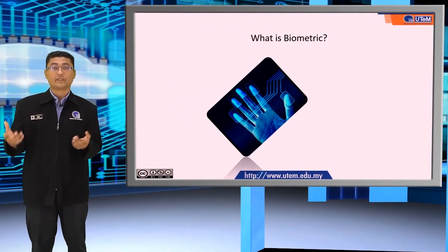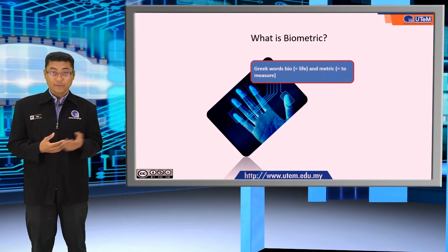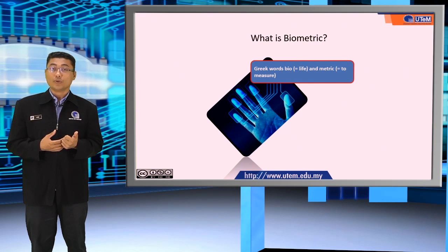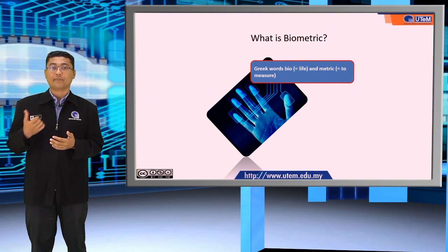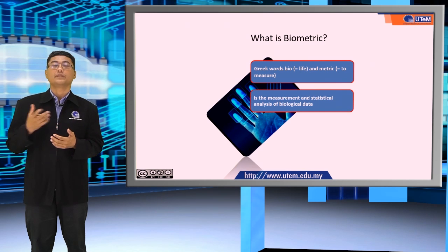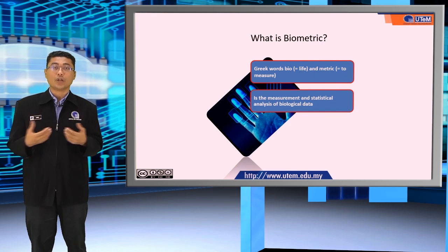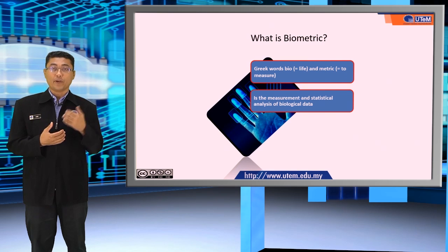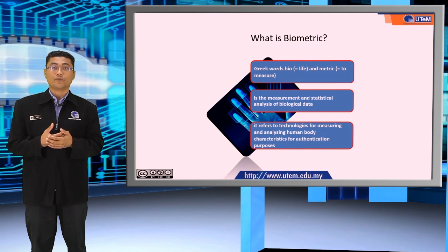So what is biometrics? The term is derived from the Greek words bio and matrix, which means life and measure. Biometrics is a measurement and statistical analysis of biological data. It refers to technologies for measuring and analyzing human body characteristics for authentication purposes.